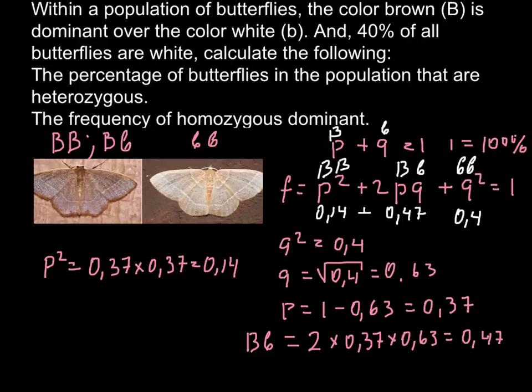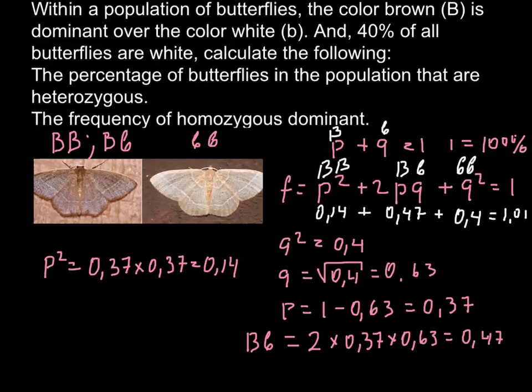If we add all these numbers, we get 1.01. That number is very close to 1. The small mistake is due to all numbers being rounded to 2 decimal places — if I use 3 or 4 decimal places, the answer would be exactly 1. So we can ignore this small discrepancy.